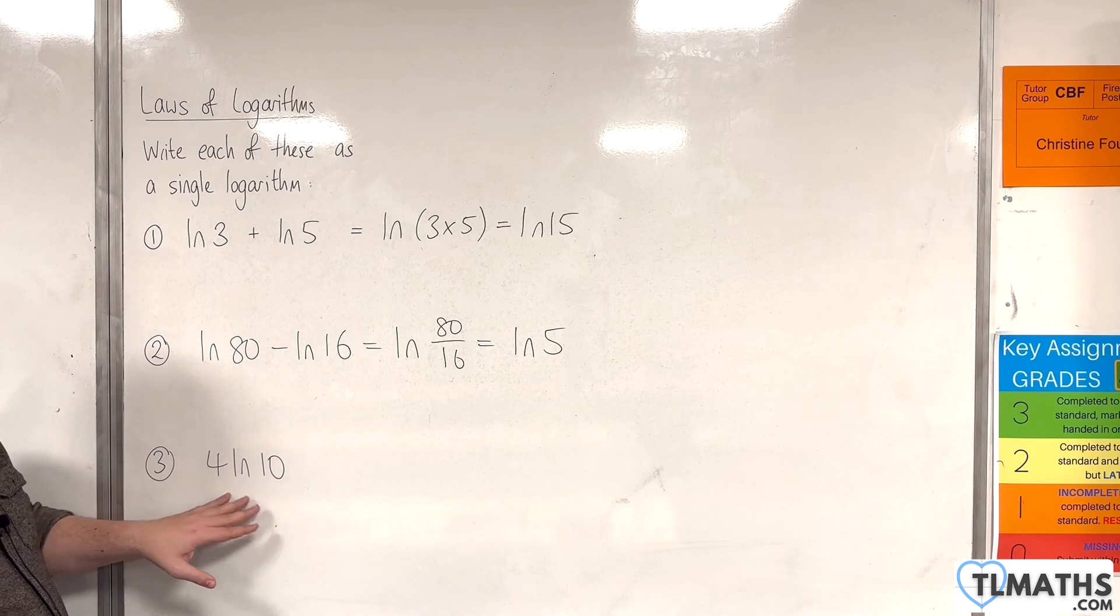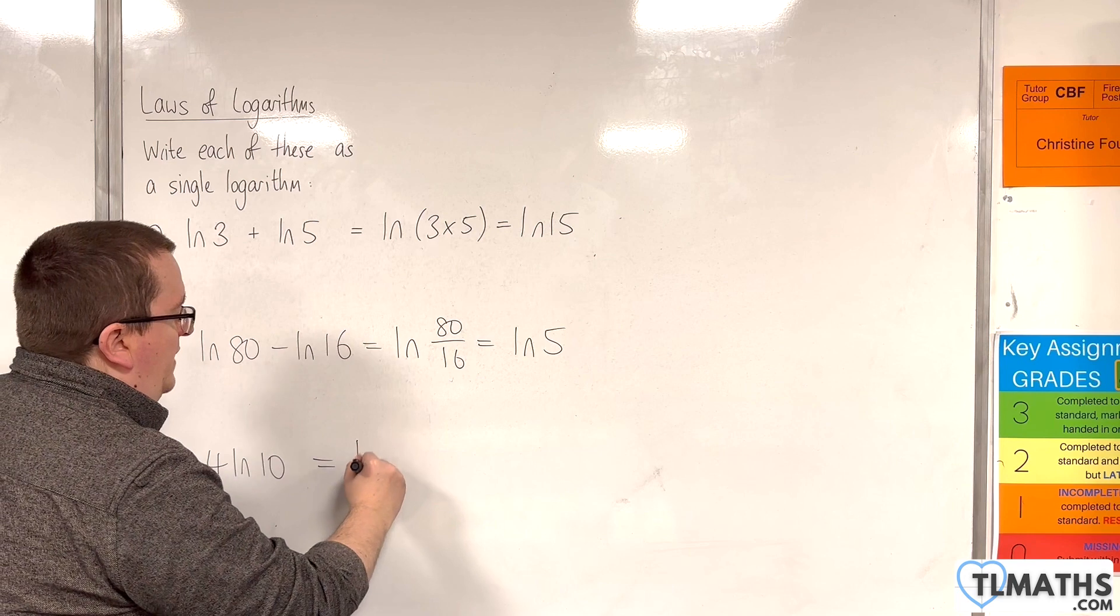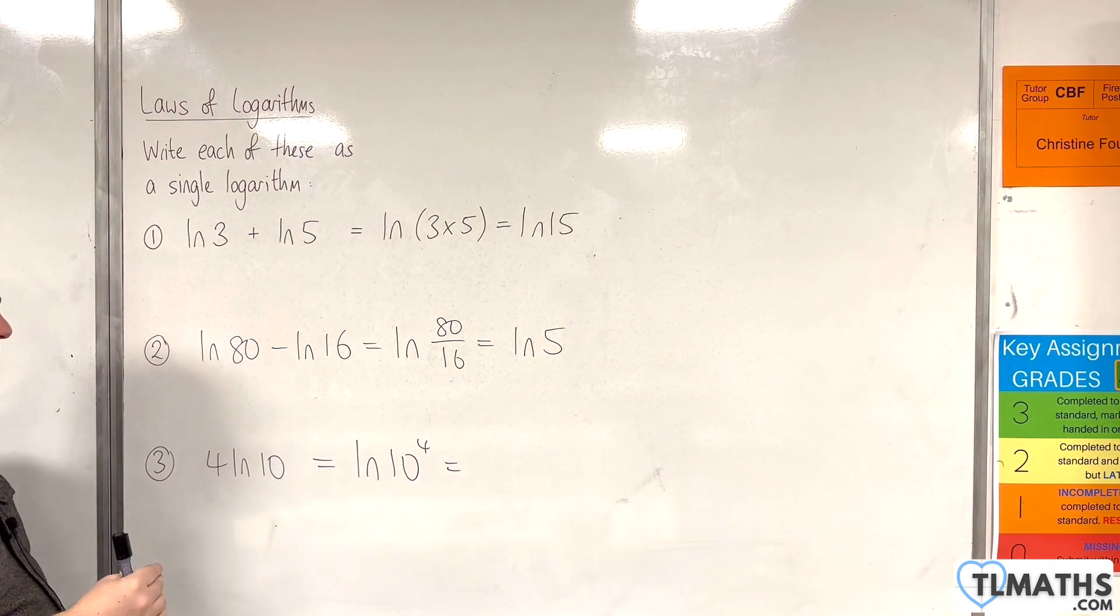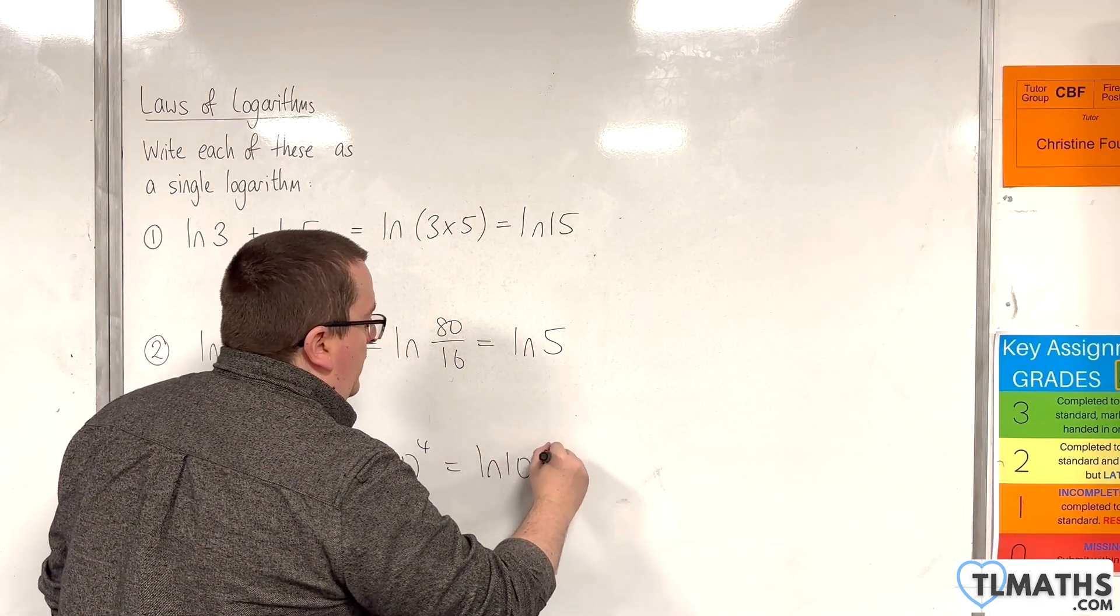For number three, we have 4ln of 10. So, we can use the power rule to write that as the natural log of 10 to the power of 4. So, bring the 4 up to the power. And then, natural log of 10 to the power of 4 is the natural log of 10,000.